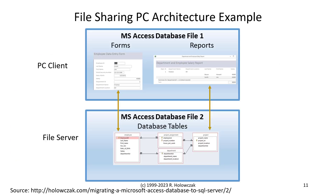An example of this architecture can be seen in Microsoft Access, which has a function that will allow you to split a file. When you split the file into two, you end up with one file that contains the data: the tables, the columns, the constraints, and the records.